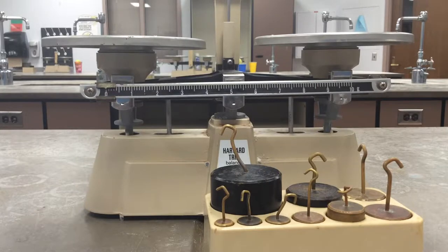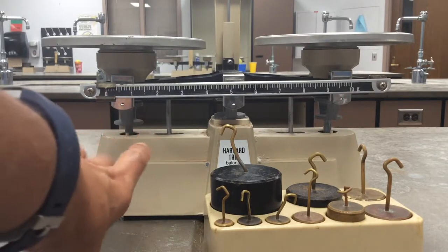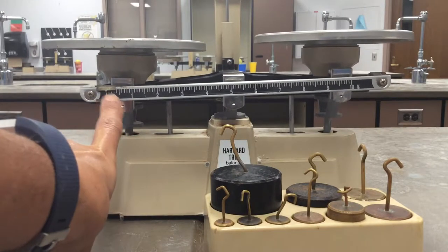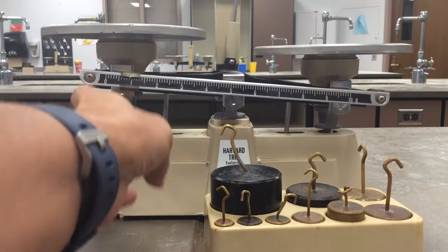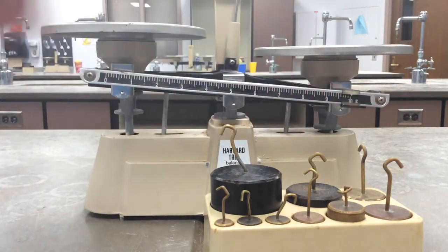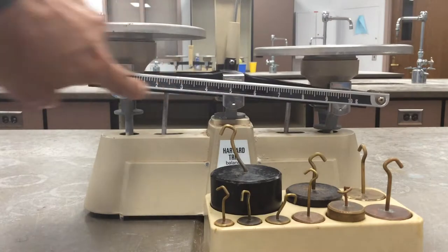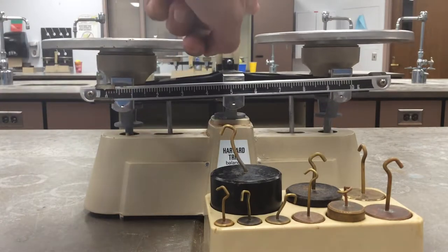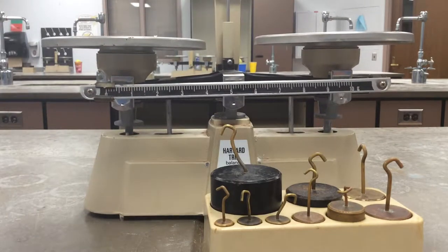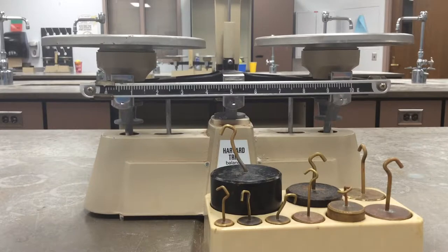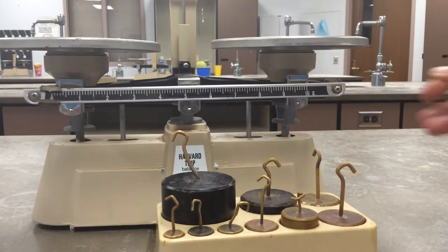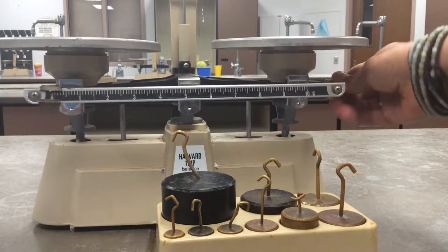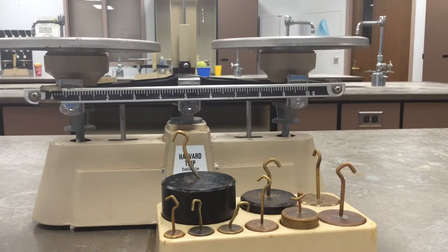So when you get into your lab, make sure always that the rider, this right here, you notice that it can go up to 10 grams, so we want to make sure that's always set to zero so that our little tiny pointer is at zero and it's balanced. You might have to occasionally use the adjustment knob to get that evened out, but this one I have already set.